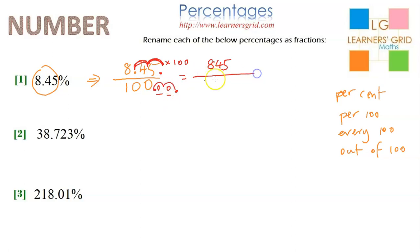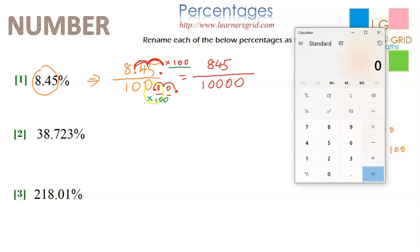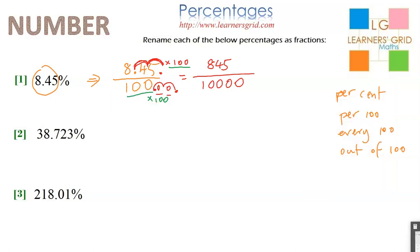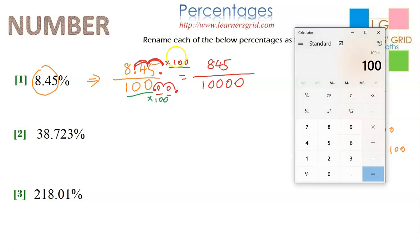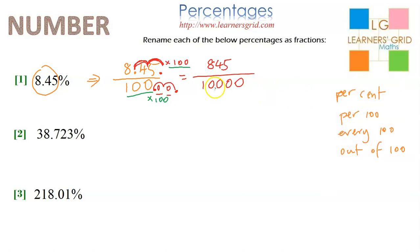So my denominator becomes 10,000. And again, all I did was multiply 100 by 100. Just in case you want to see that: 100, which I had originally, multiplied by 100 equals 10,000. You'll see here the denominator is 10,000.